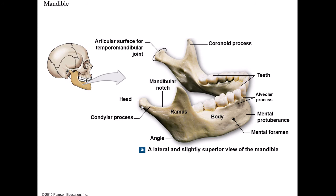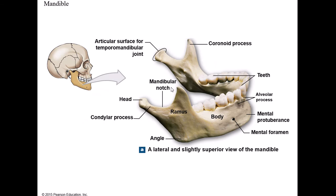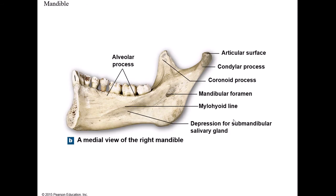At the top of the ramus, the front point is the coronoid process, and the back point is the condylar process, which articulates with the mandibular fossa to form the TMJ. Between them is the mandibular notch. Where the ramus meets the body is the angle of the mandible. The mandible has two foramina: on the inside of the ramus is the mandibular foramen, and on the outside is the mental foramen.